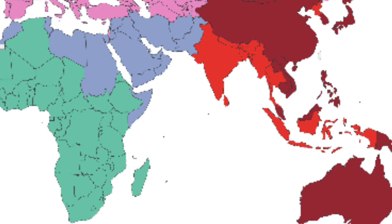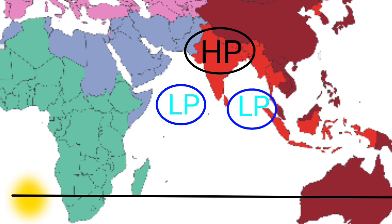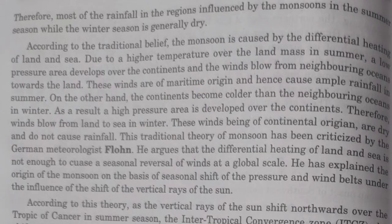During the winters, when the sun shifts towards the Tropic of Capricorn, the land quickly radiates back the heat, creating a high pressure zone, while the water retains heat, creating a low pressure zone. As a result, there is a reversal of wind — the winds that once entered the land masses now withdraw or retreat from the land masses and go back to the sea. In this way, due to the differential heating of land and water, monsoon is caused.